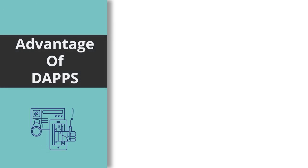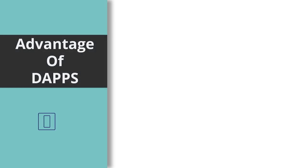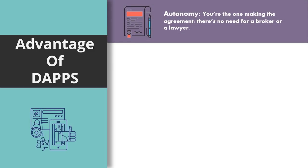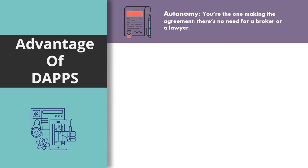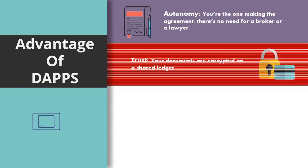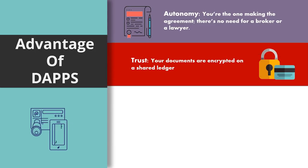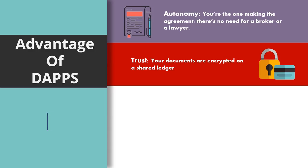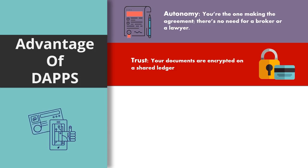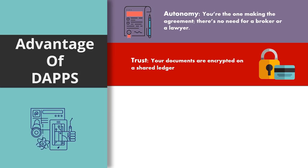Let us go over the advantages of decentralized applications or blockchain applications. Firstly is autonomy — it's autonomous because you're the one making the agreement. There's no need for a broker or a lawyer of any sort or any sort of third party for that matter. Secondly, there's a lot of trust because all your documents are encrypted using modern technology and modern encryption methods, and it's all sharded and distributed on a decentralized network which is being run by a shared ledger. So there's literally no way anybody can break into it, at least unless quantum computing becomes a very big thing in the next six months or something.